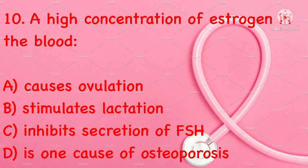A high concentration of estrogen in the blood causes: ovulation, stimulates lactation, inhibits secretion of FSH, or is one cause of osteoporosis. Correct answer is C: inhibits secretion of FSH.